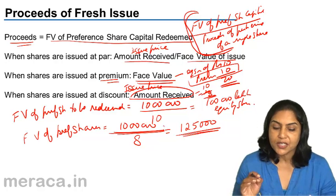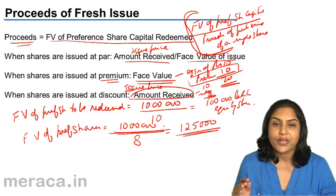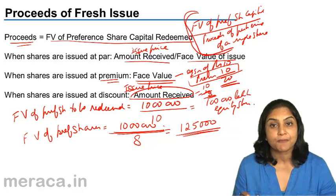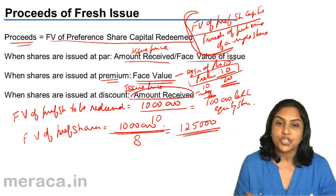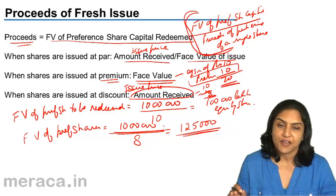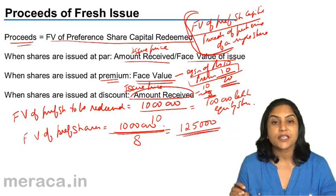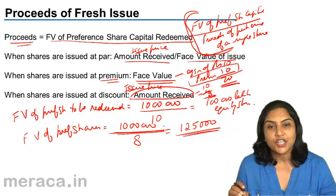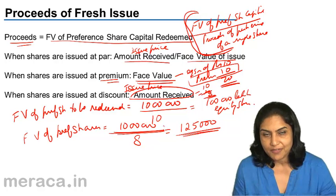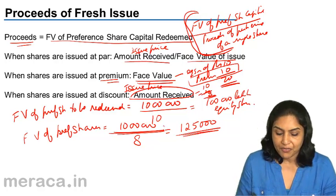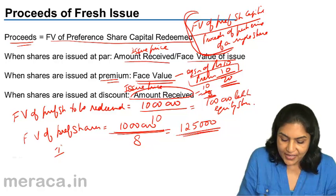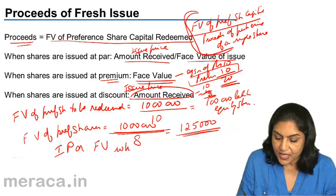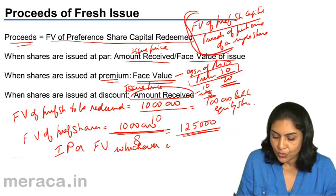In short, what is the proceeds of fresh issue? When shares are issued at par, it is the face value or issue price — both are the same. When they are issued at a premium, we consider the face value. When shares are issued at a discount, proceeds of fresh issue means the issue price, not the face value. Therefore, in brief, we can say it is either the issue price or the face value, whichever is lower.